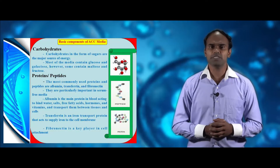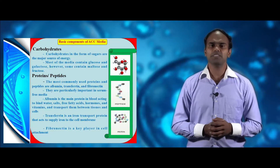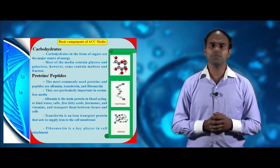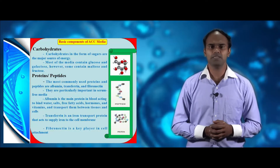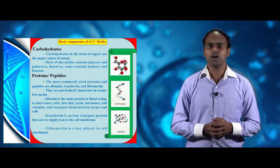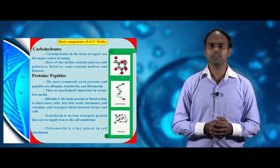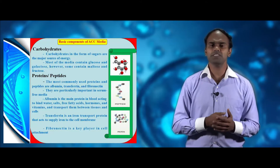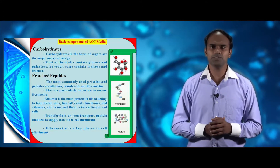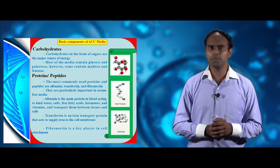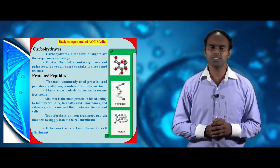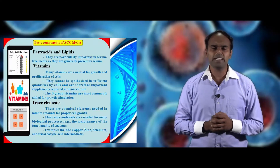Now we see about proteins and peptides. The most commonly used proteins and peptides are albumin, transferrin and fibronectin. These proteins and peptides are very important in serum-free media. Albumin is a major protein present in the blood; it binds with water, free fatty acids and hormones, helping to transfer them within cells and tissues. Transferrin is an iron transfer protein which helps to transfer iron to the membrane. Fibronectin is a protein which helps in cell attachment.